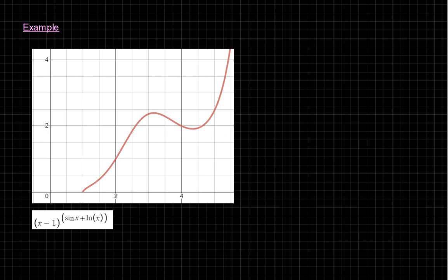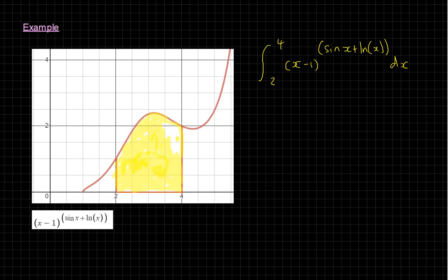Looking at that specific problem — integrating from 2 to 4 of that function — we're going to try to come up with a way of getting a meaningful approximate answer. The first thing to recognise is simply that this number must exist. If I mark on the graph x equals 2 and x equals 4, the yellow shaded region between the curve and the x-axis is the answer to this question. This goes back to what the actual definition of integration is, and we need to think of a way to approximate this.